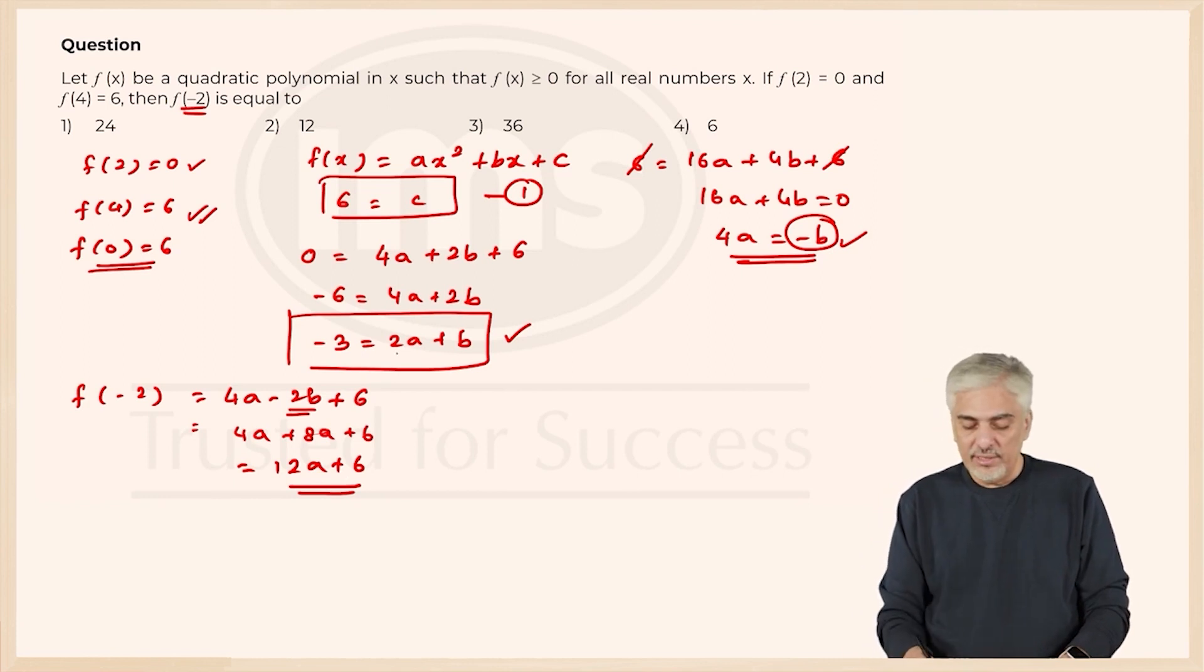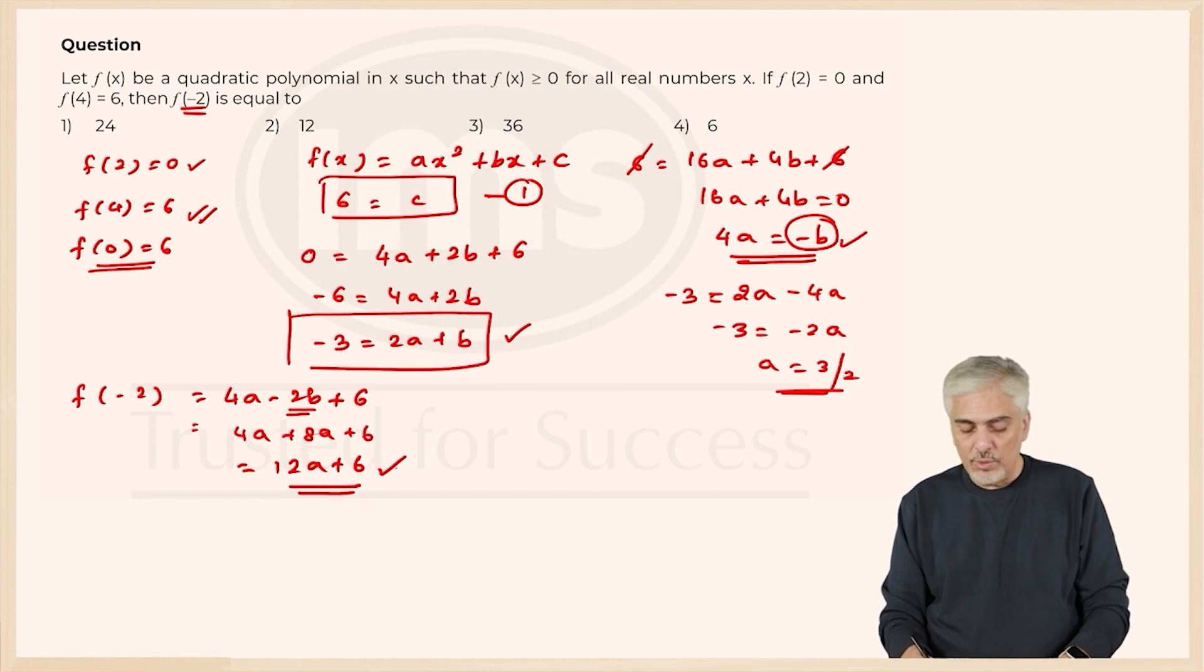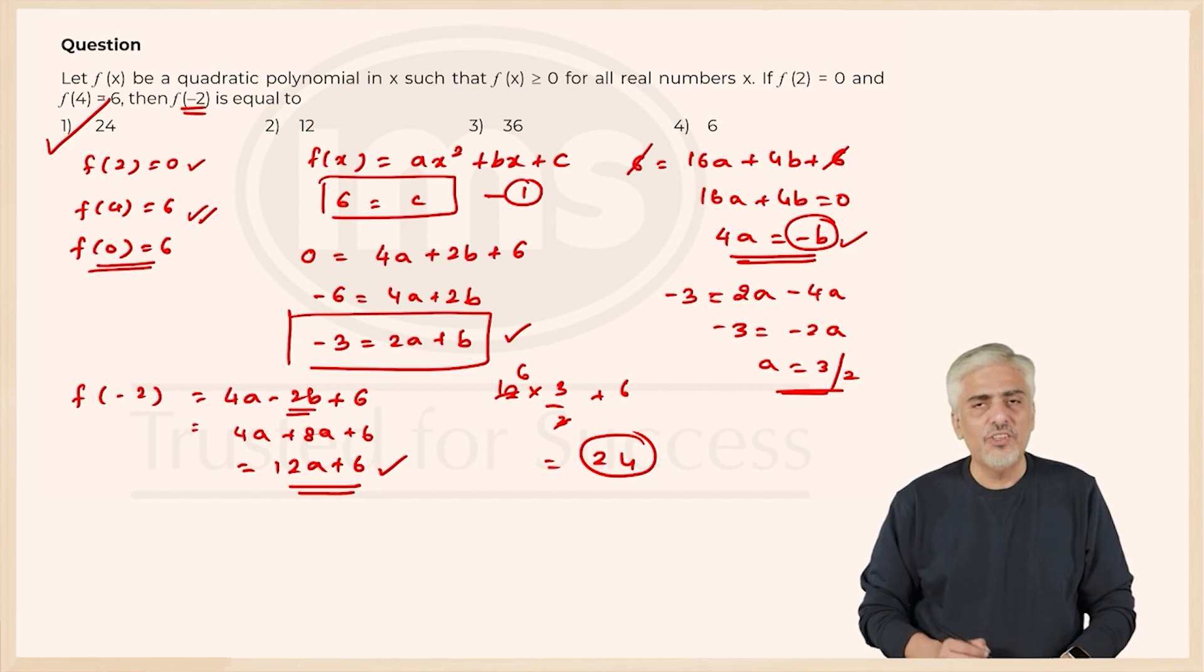Let us continue further. We have this equation. So let us find a. We have minus 3 is equal to 2 a plus b can be written as minus 4 a. So minus 3 is equal to minus 2 a. a is 3 by 2. Put that over here value. So f of 12 a plus 6 will be 12 into 3 by 2 plus 6 that will be 18 plus 6, 24 which is the first option.